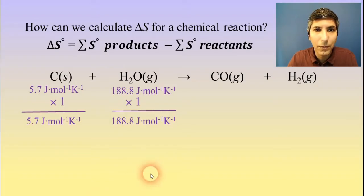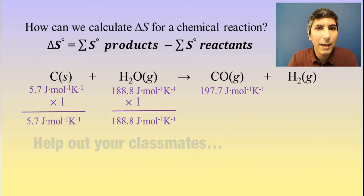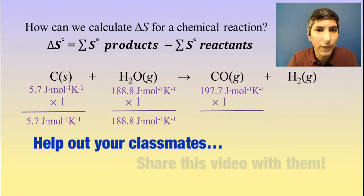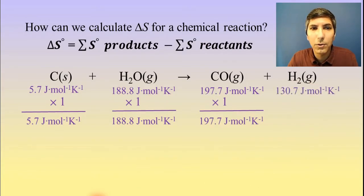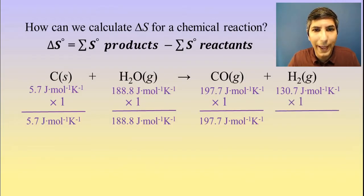On the other side of the arrow, we have carbon monoxide gas, which has an entropy of 197.7 joules per mole per Kelvin, and we have of course only one mole of that. And the hydrogen gas has an entropy of 130.7 joules per mole per Kelvin, and there's only one mole of that.